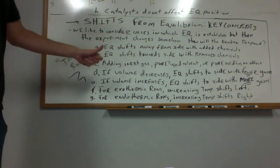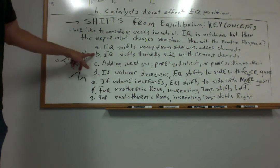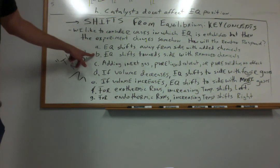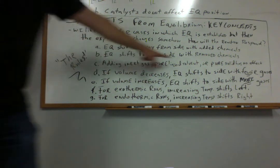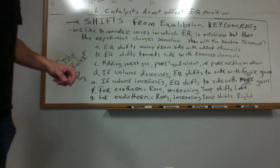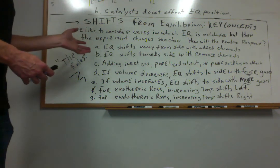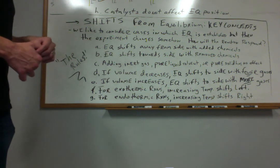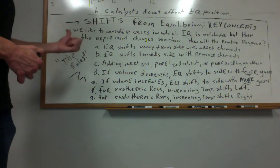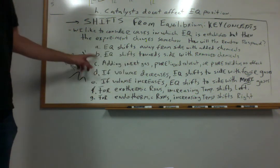It shifts away from where we add more chemicals because we increased our concentration, and the equilibrium has to shift the other direction to maintain a constant K. Rule B tells us the equilibrium will shift towards the side with removed chemicals. So if I remove a reactant — just magically remove a reactant from my reaction system — the equilibrium is going to shift towards the reactant side because I'm going to replace some of that material.